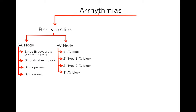Second-degree type 1 and type 2 AV block: second-degree AV block means that some P waves conduct and some don't. If there is PR prolongation prior to loss of conduction, this is type 1 or Wenckebach. If there is no PR prolongation prior to loss of conduction, this is type 2 or Mobitz 2. Third-degree AV block is complete heart block where the P waves and QRS complexes are completely dissociated.